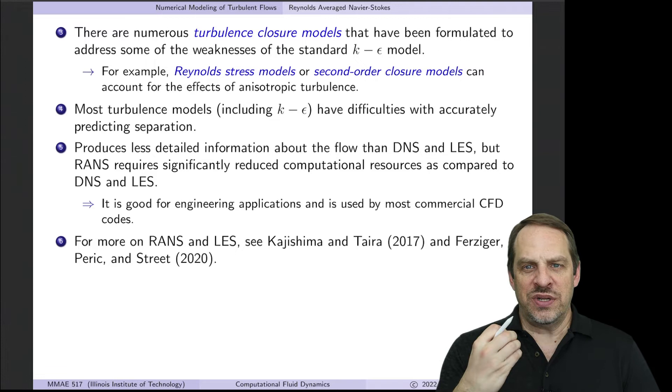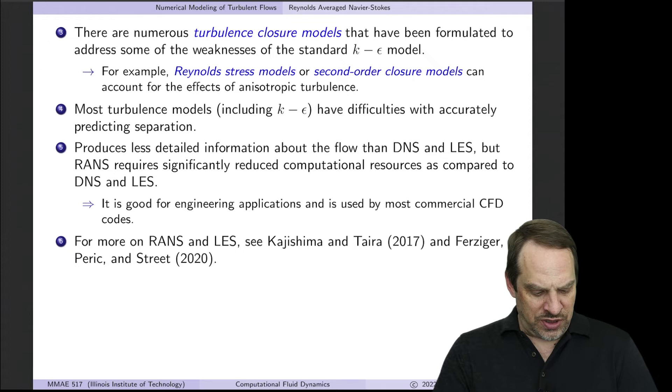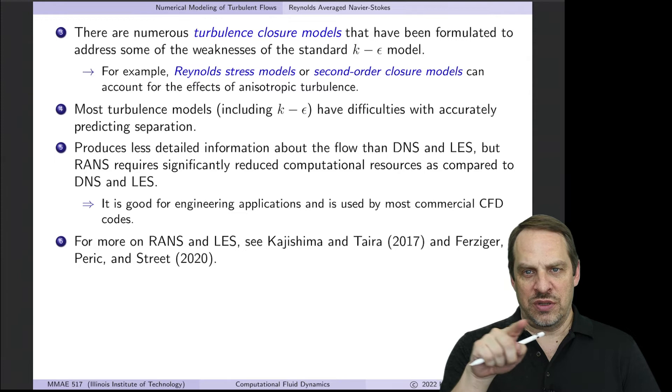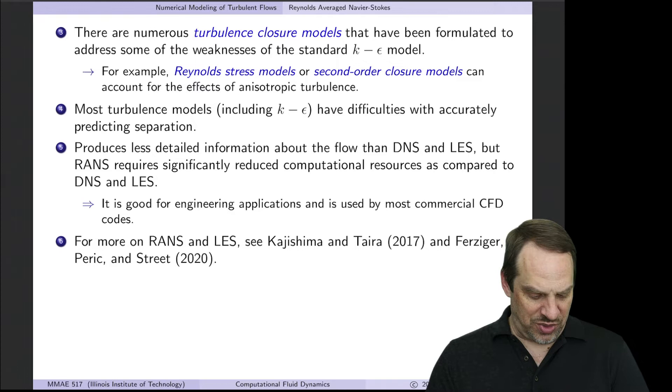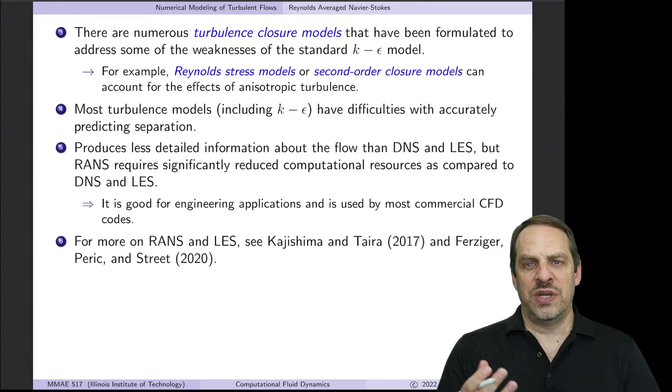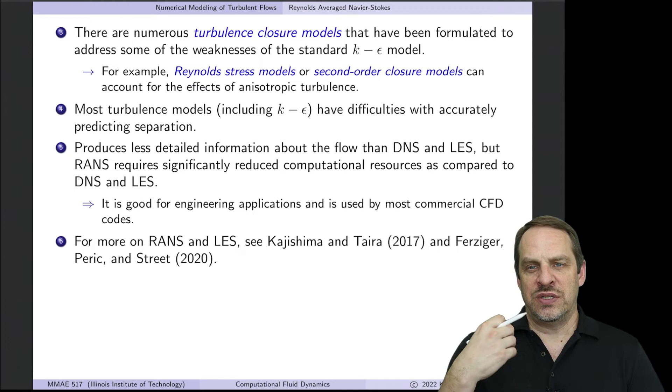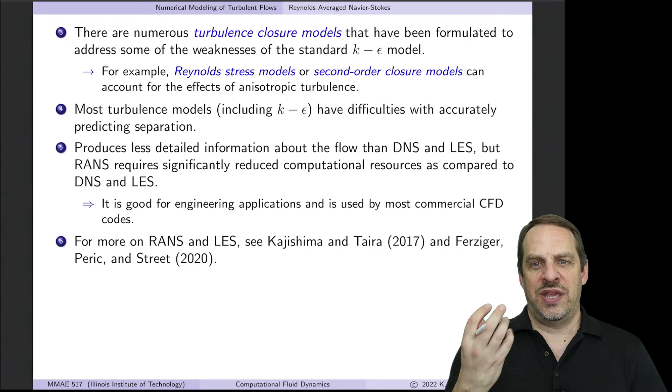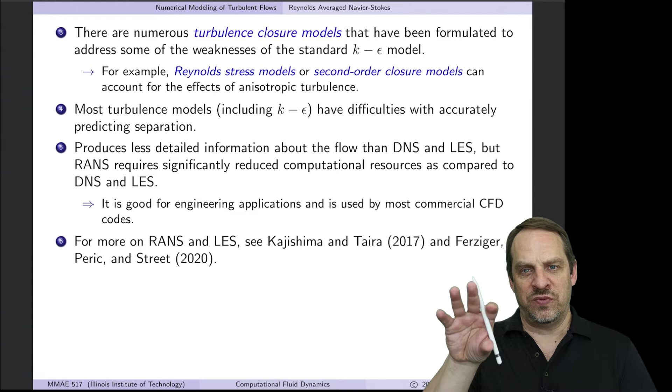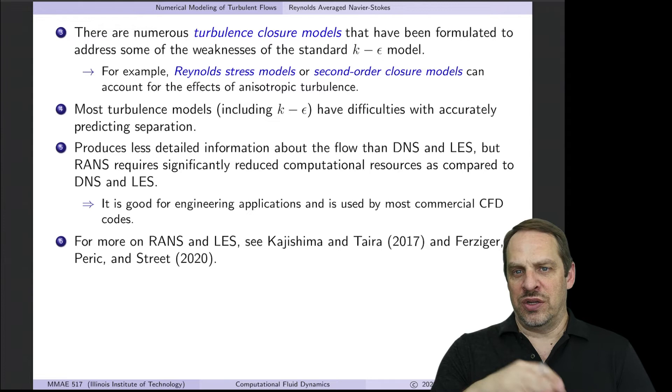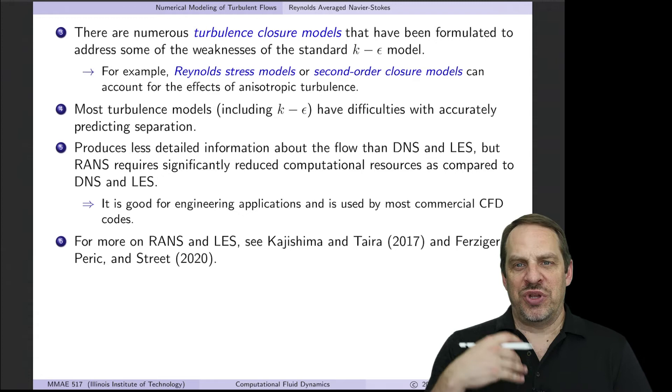Now the big knock on RANS models is near solid surfaces. You can get boundary layers and separation, where you have recirculation regions. RANS models are generally notoriously poor at predicting separation. Some do better than others. We actually get much less detailed information about the flow as compared to LES and DNS. RANS results are much less detailed. You're stripping out all the turbulence that's being accounted for in the model.